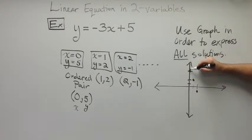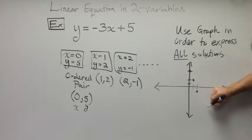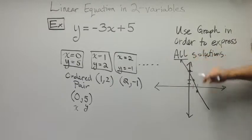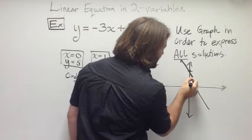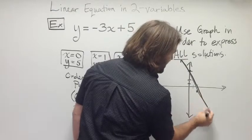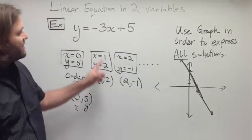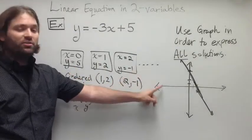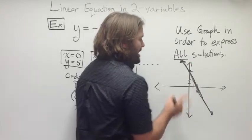Notice that when we plot these points, they line up in a certain way. In this case, they happen to form a straight line. So, this is why we call this type of equation a linear equation. Because when we take all the solutions and line them up, it forms a straight line.